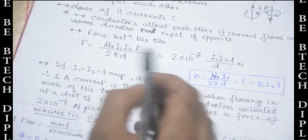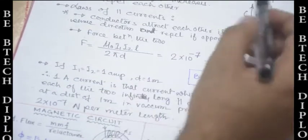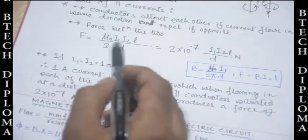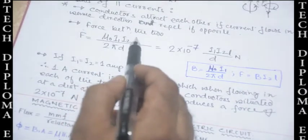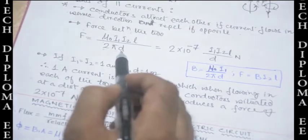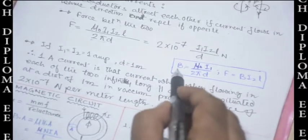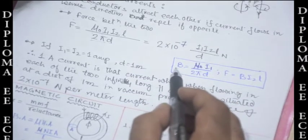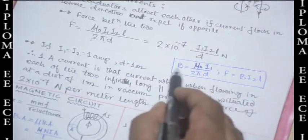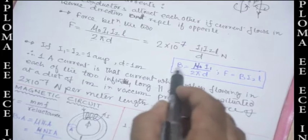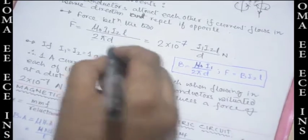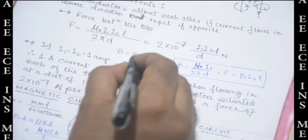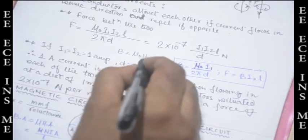The force between the two conductors is given by F = μ₀ · I₁ · I₂ · L / (2πD). To derive this, we know that flux density B is equal to μ₀ · H.